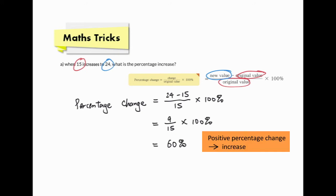The result is 60%. According to the question, the percentage increase is 60%. Next, part b: when 20 decreases to 12, find the percentage decrease.